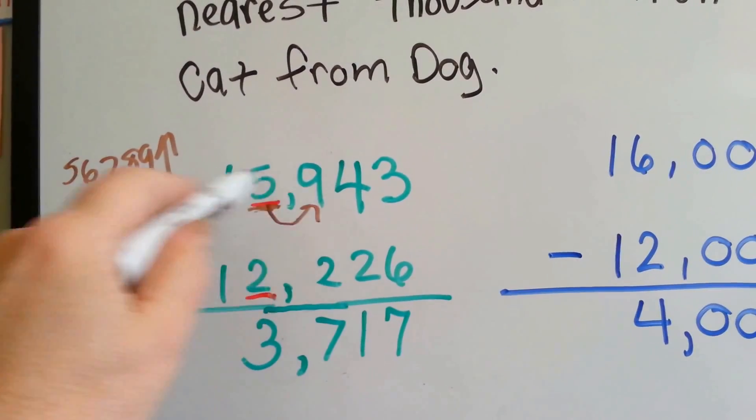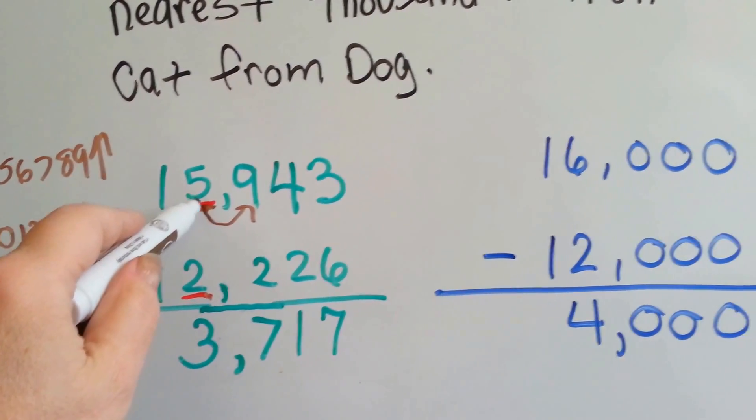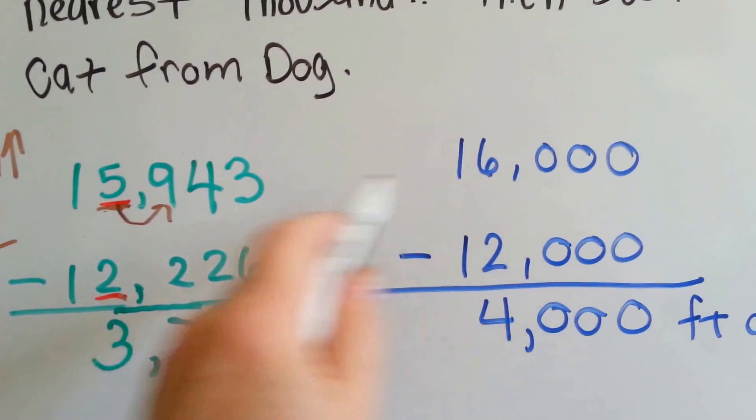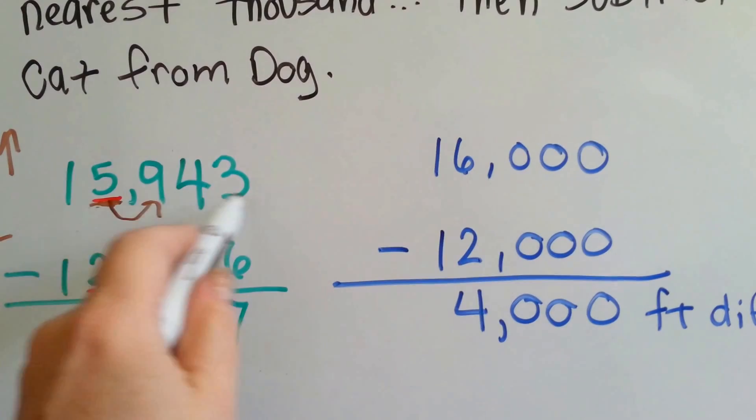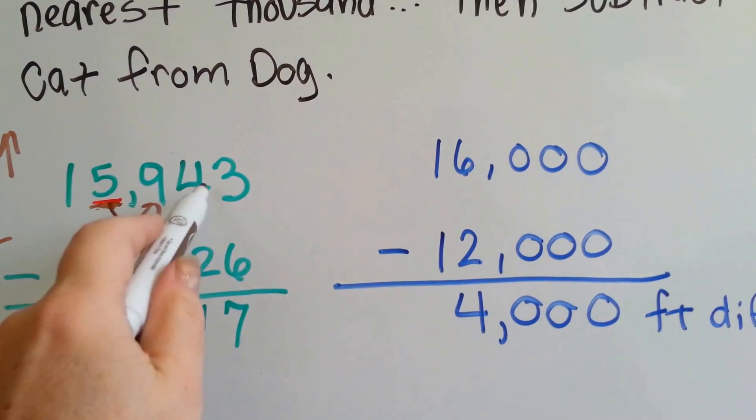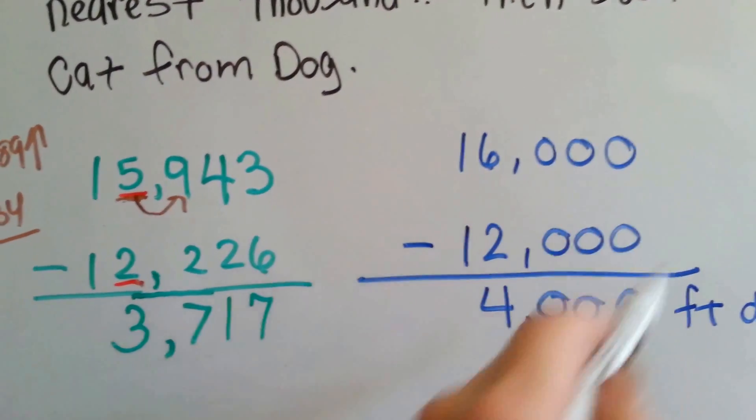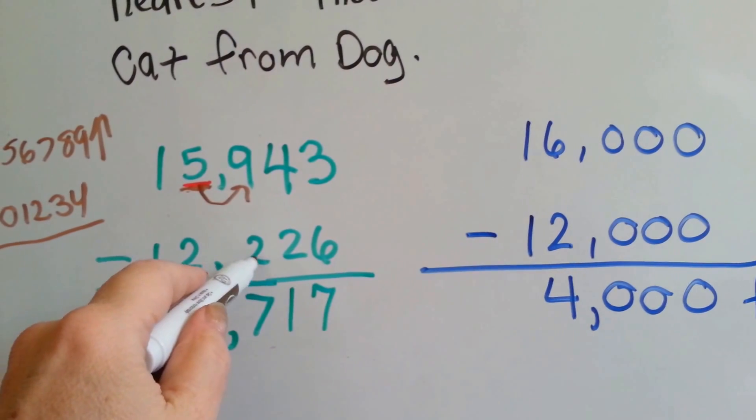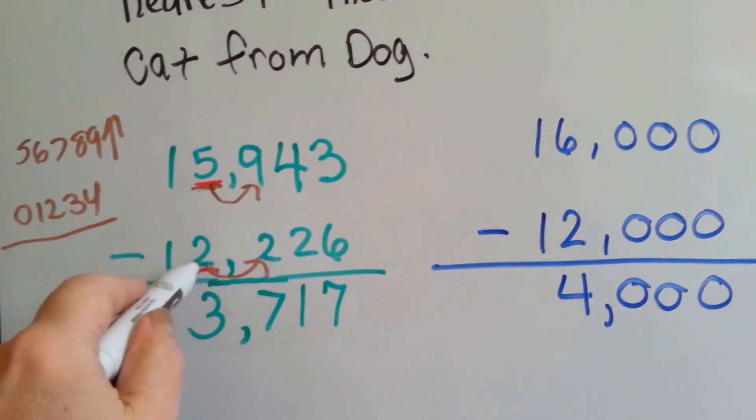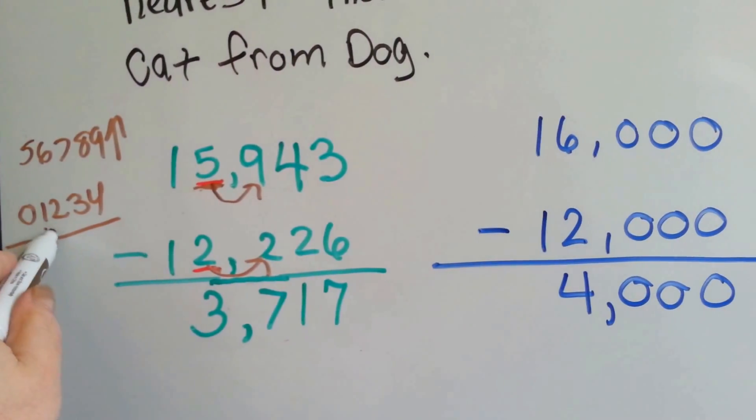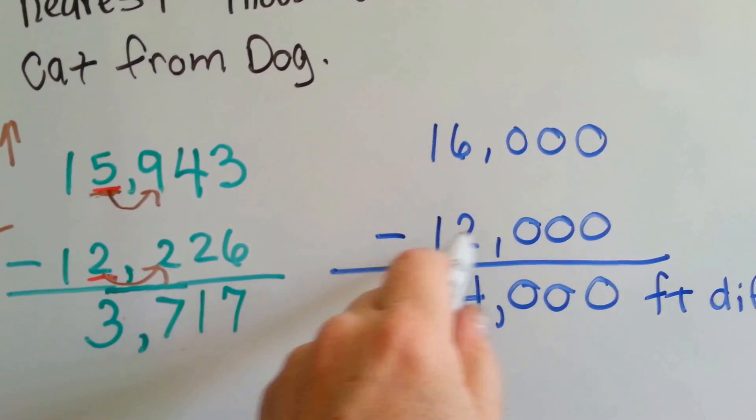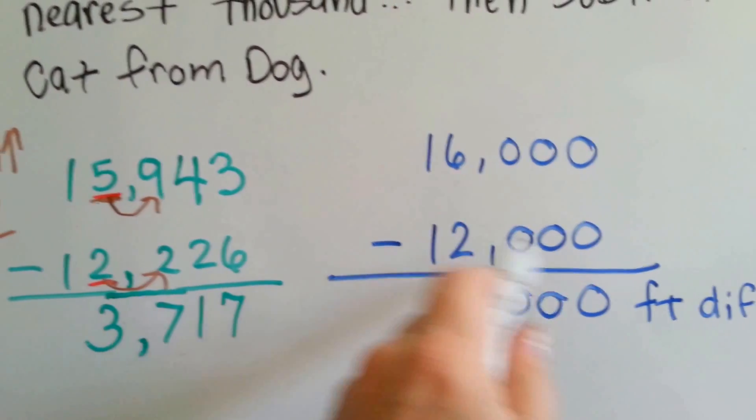So, this is a 9, so it's telling the 5 to go up to a 6, and then it's finished doing its job, and it becomes a 0, and so do the other numbers. So, there's 0s there. This 2 is telling this 2 to stay the same. See? So, it becomes a 12,000. These 3 become 0s.